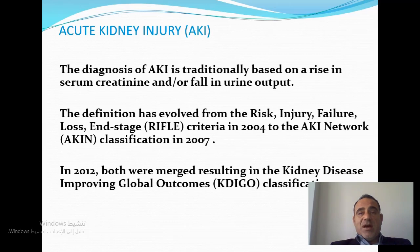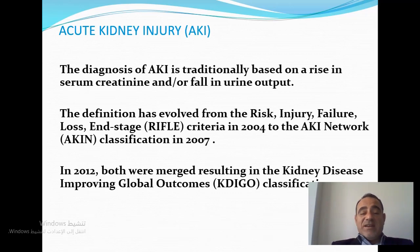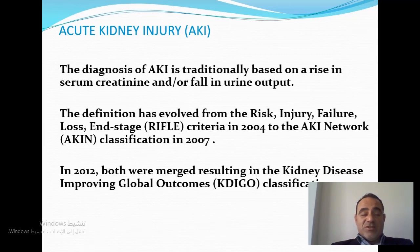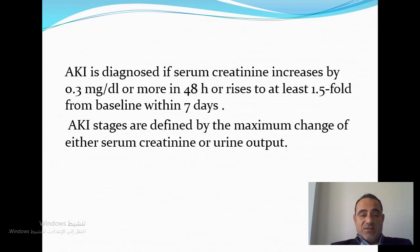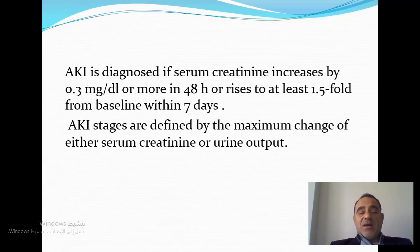The definition of acute kidney injury has changed over the last decades. In 2004, we had the RIFLE criteria, which is now obsolete. In 2007, we had the AKIN criteria. And in 2012, updated in 2014, we have the KDIGO classification, which is the current standard. AKI is diagnosed if serum creatinine increases by 0.3 mg/dL — it used to be 0.5, now it is 0.3 — within 48 hours, or rises at least 1.5-fold from baseline within the last seven days.